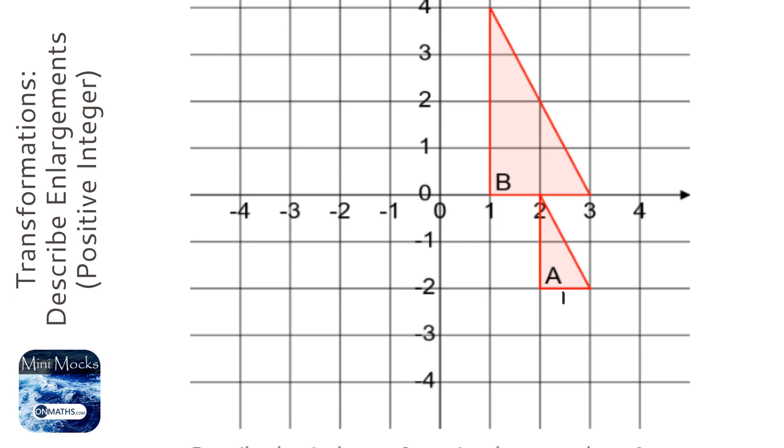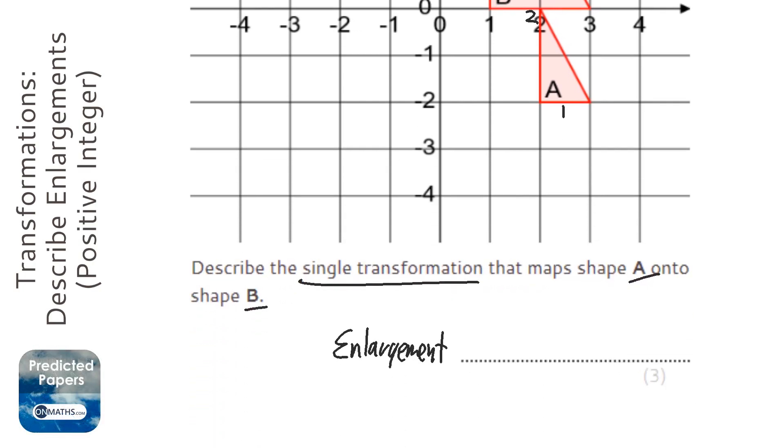If I have a look at the bottom, that's one square across on A and it becomes two squares across on B. So what do I times one by to get to two, or I could do two divided by one. So the one on the second shape divided by the one on the first shape: two divided by one is two. So we know that the scale factor is two.